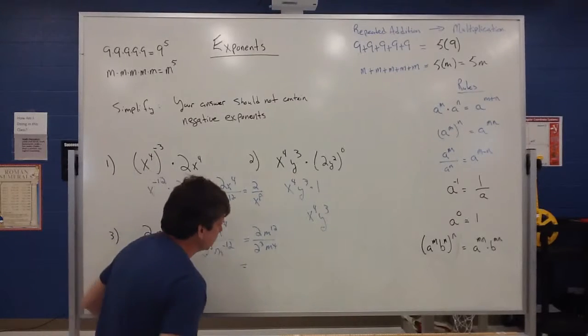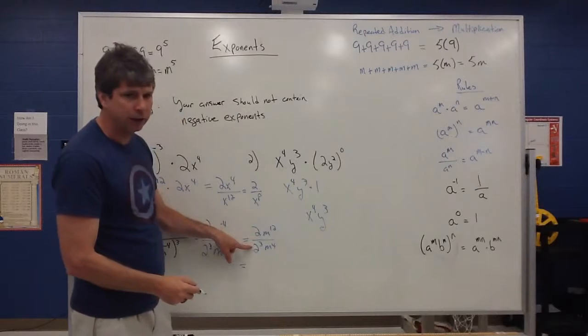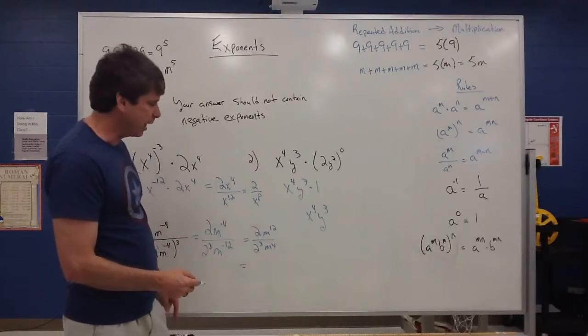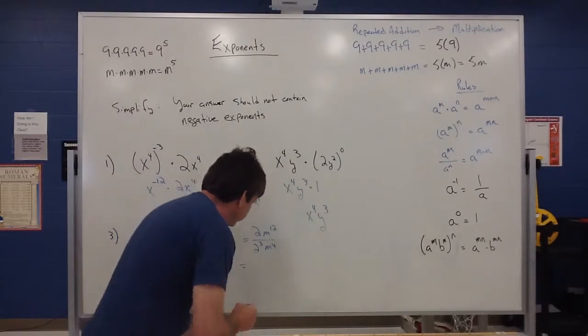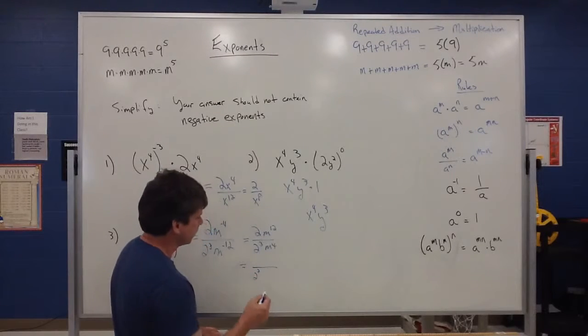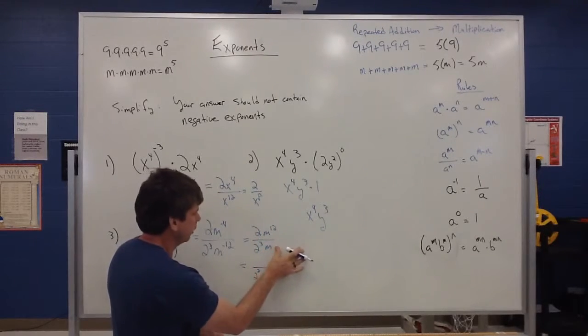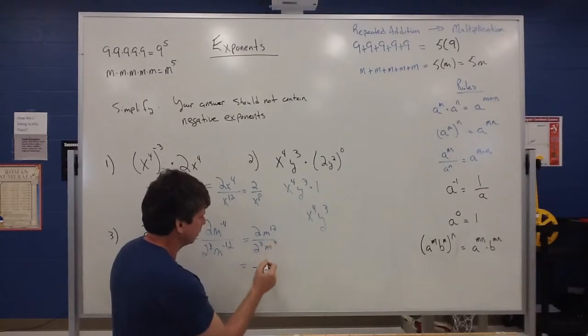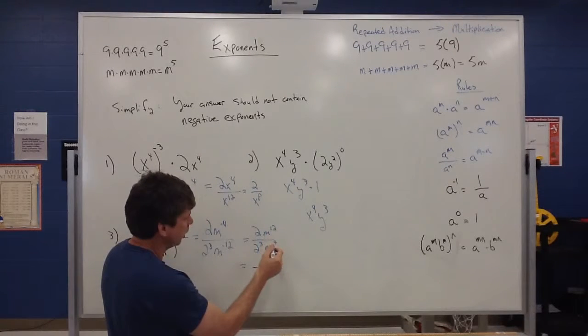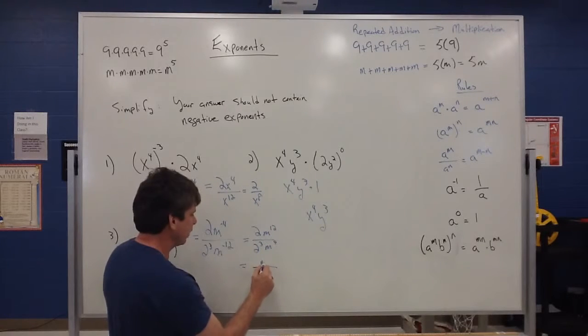Now some things I pick up on is there's a 2 up here and there's 3 2's down here that means I can divide out a 2 and I'm left with a 2 squared on the bottom. I also pick up that's simplified out. If I have 12 m's on the top and 4 m's on the bottom, I can divide out 4 of them I'm left with 8 m's on the top.